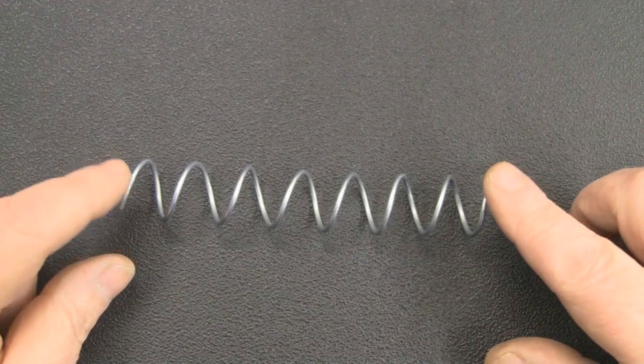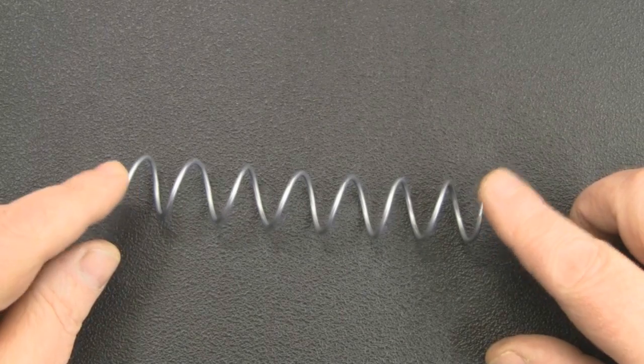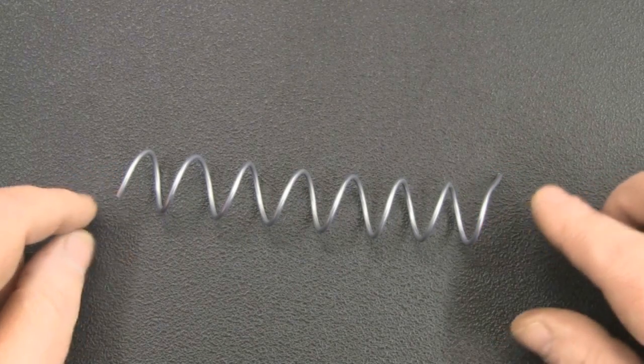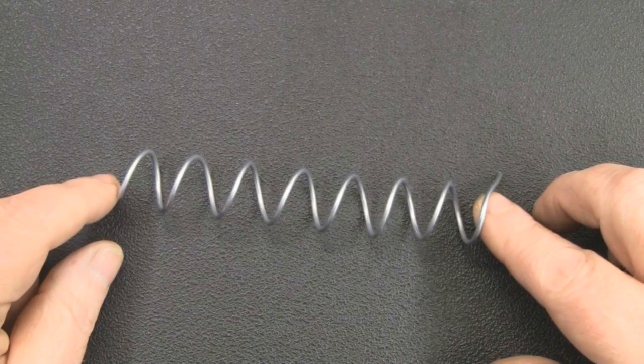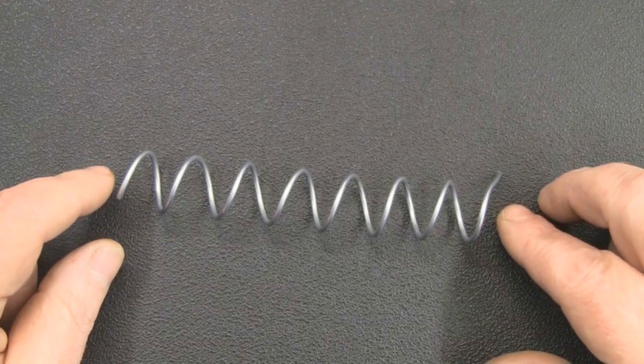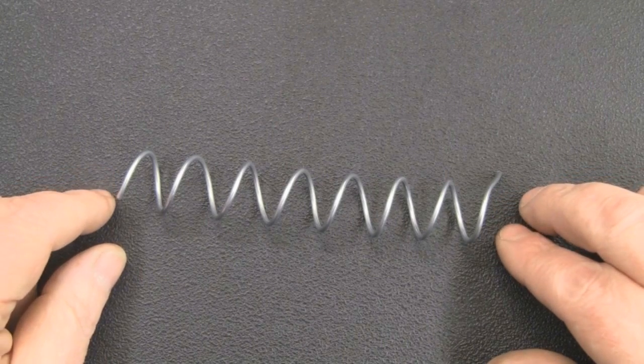I've got here on the bench a six turn helical, or it will be when I finish it off. A six turn helical for 5.8 gigahertz will give me around 12.6 dB of gain.